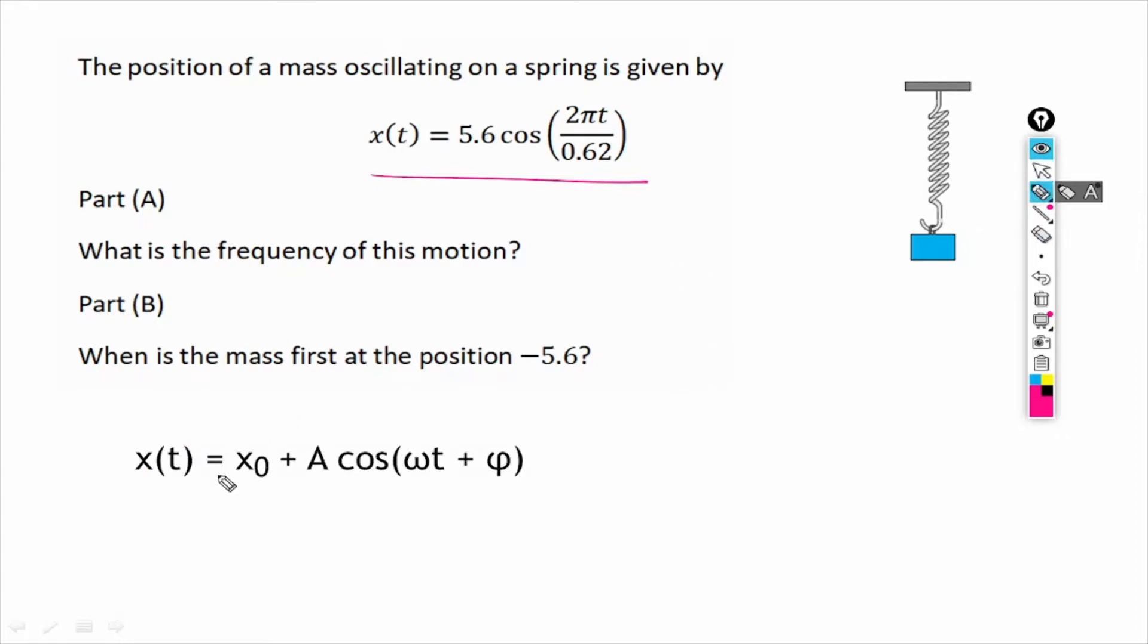Now here x₀ is the initial position of the mass and omega is the angular frequency. So if we compare these equations, then we get omega equals 2π over 0.62, which is the angular frequency.